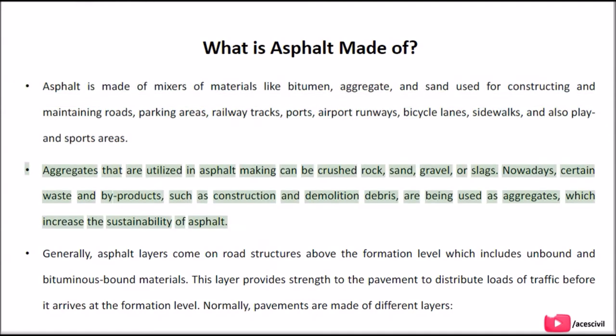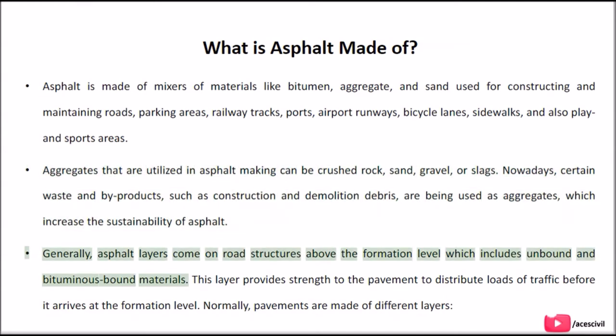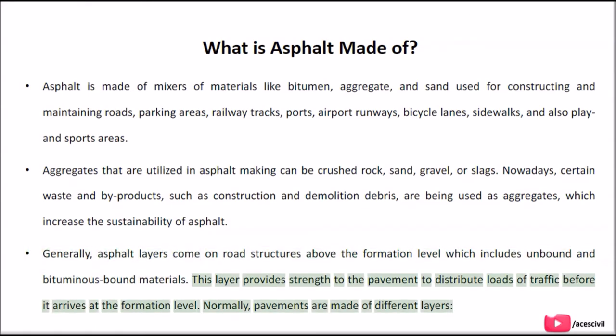Aggregates used in asphalt making can be crushed rock, sand, gravel, or slag. Nowadays, certain waste and by-products such as construction and demolition debris are being used as aggregates, which increases the sustainability of asphalt. Generally, asphalt layers come on road structures above the formation level, which includes unbound and bituminous bound materials. This layer provides strength to the pavement to distribute traffic loads before they arrive at the formation level. Normally, pavements are made of different layers.